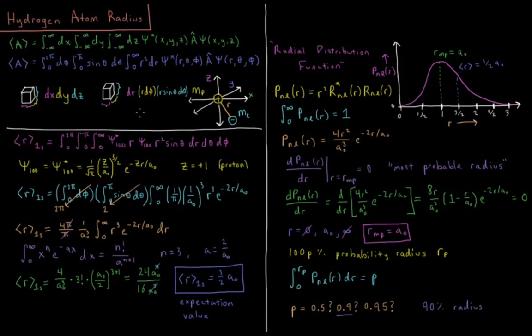But what we saw here is that there are multiple different metrics for what the radius of the hydrogen 1s orbital is. We saw that the most probable radius is the Bohr radius a0, 0.529 angstroms, but the mean, the expectation value of the radius is actually larger than that, 3 halves a0.